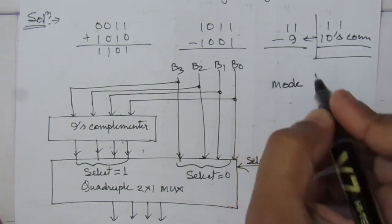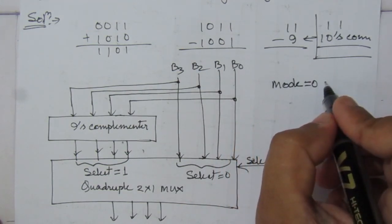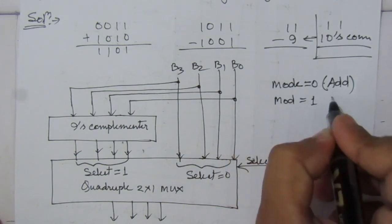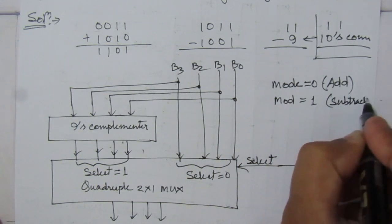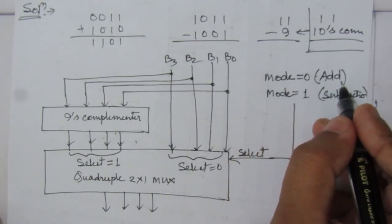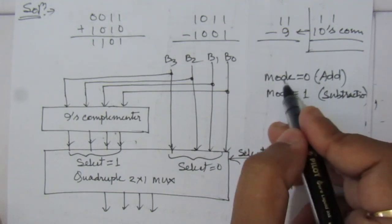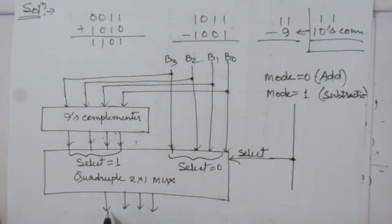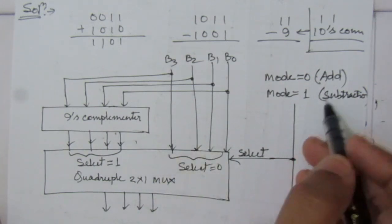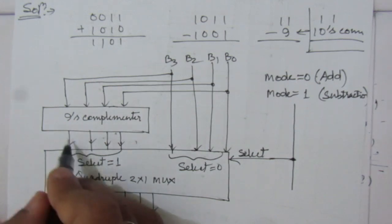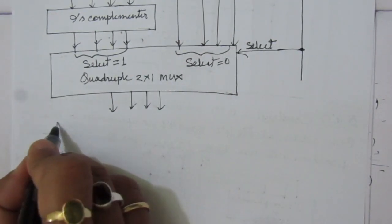When mode equals 0, addition is performed — the select line is 0, so the B inputs pass directly through the multiplexer to the BCD adder. When mode equals 1, subtraction is performed — the select line is 1, so the 9th complemented outputs come through to the BCD adder input. We then need a 4-bit BCD adder at the output of the multiplexer.